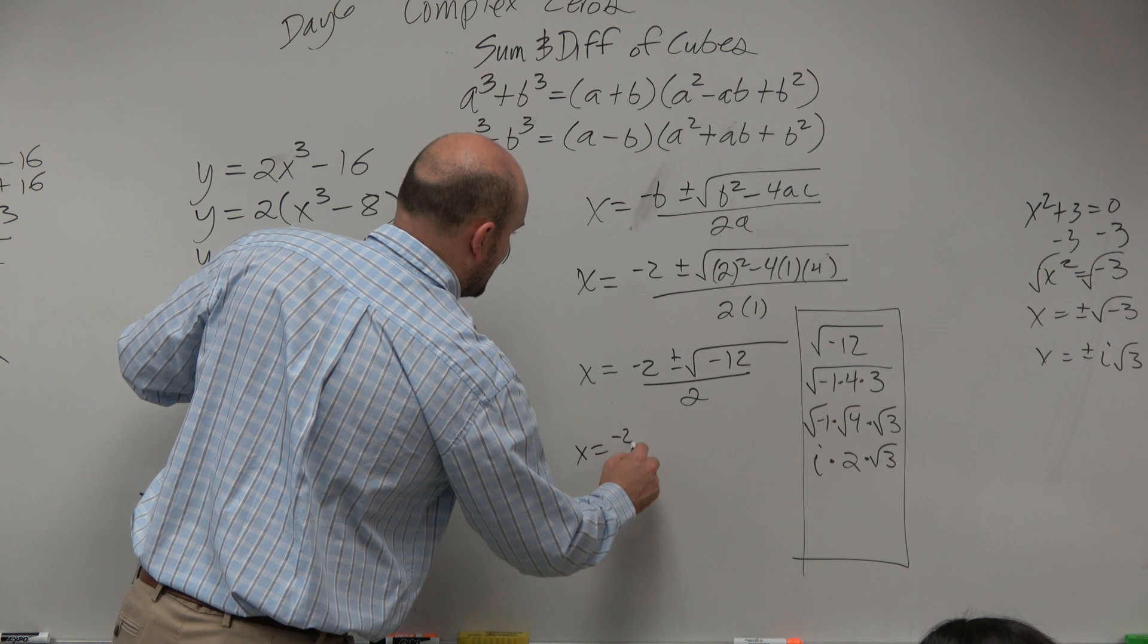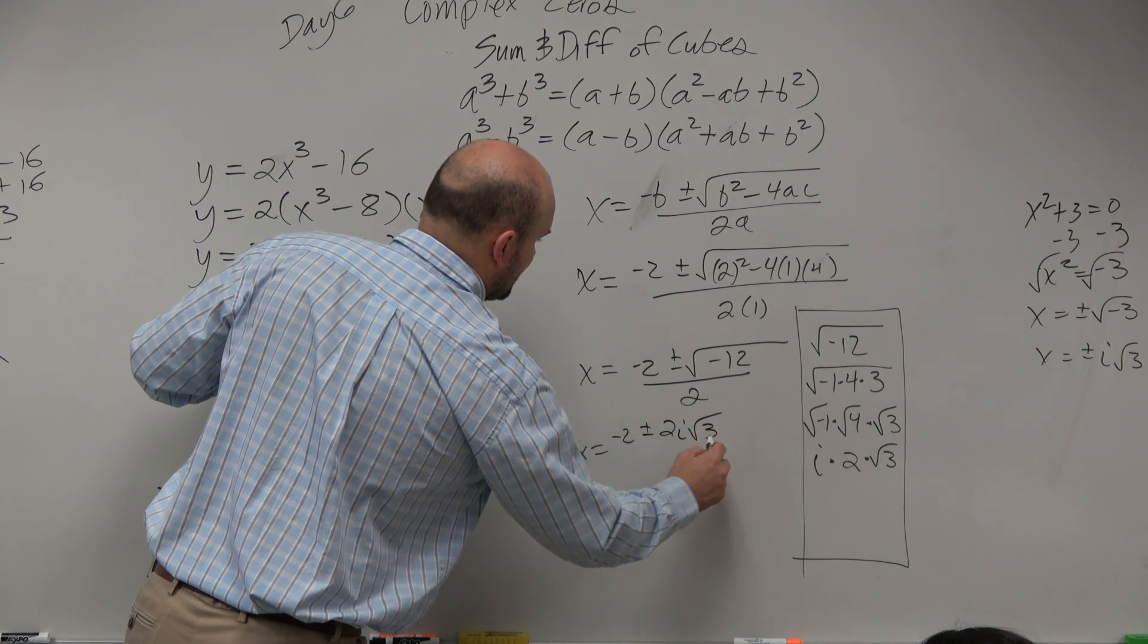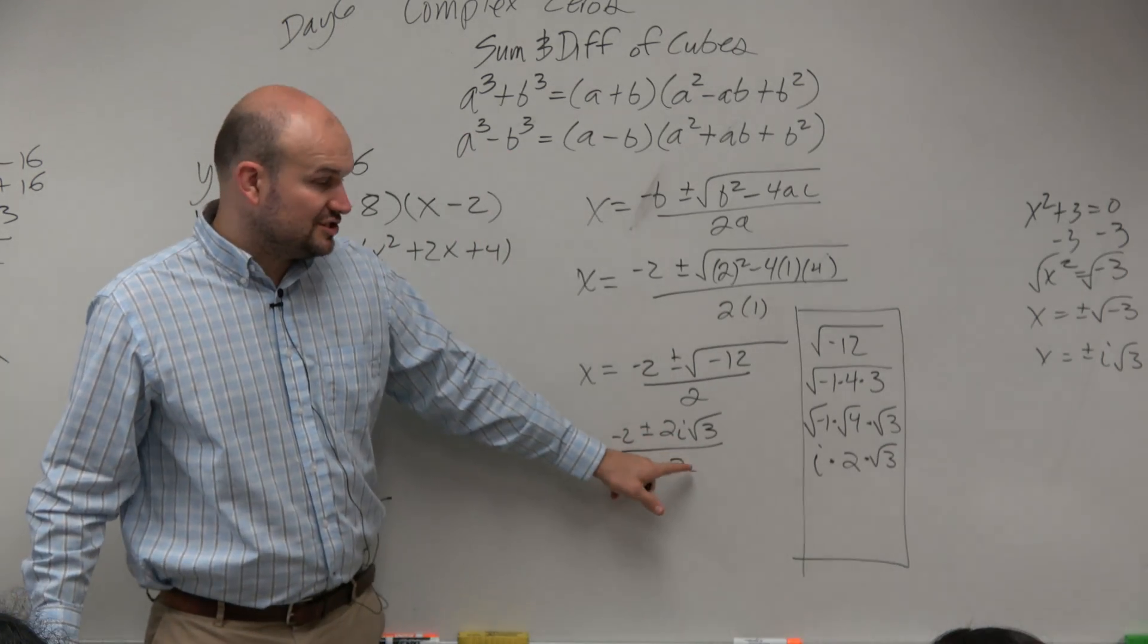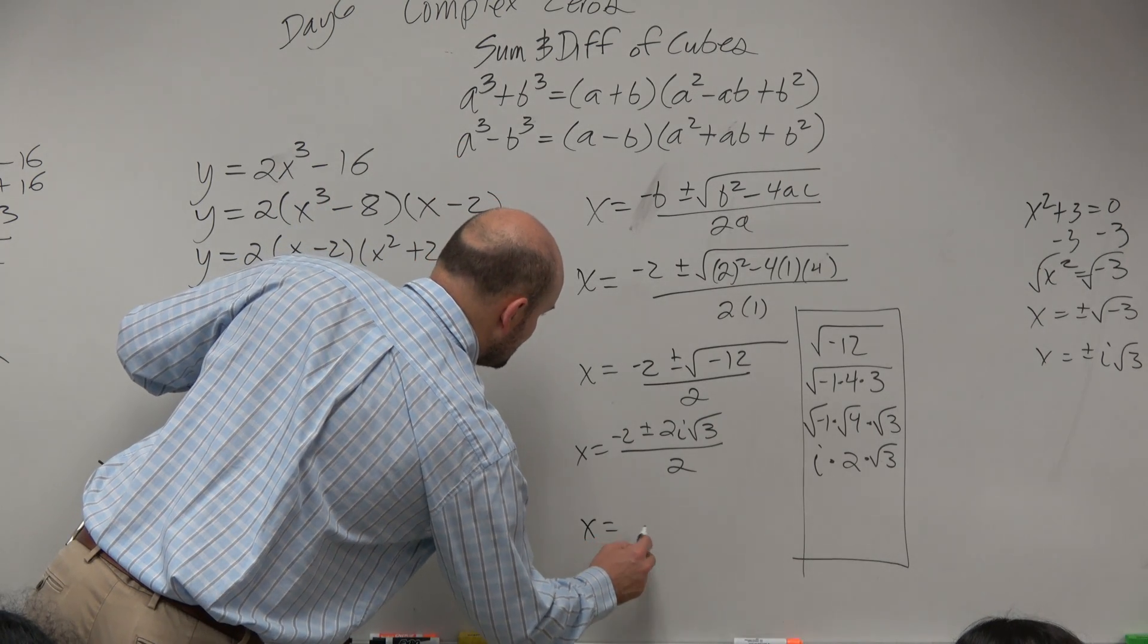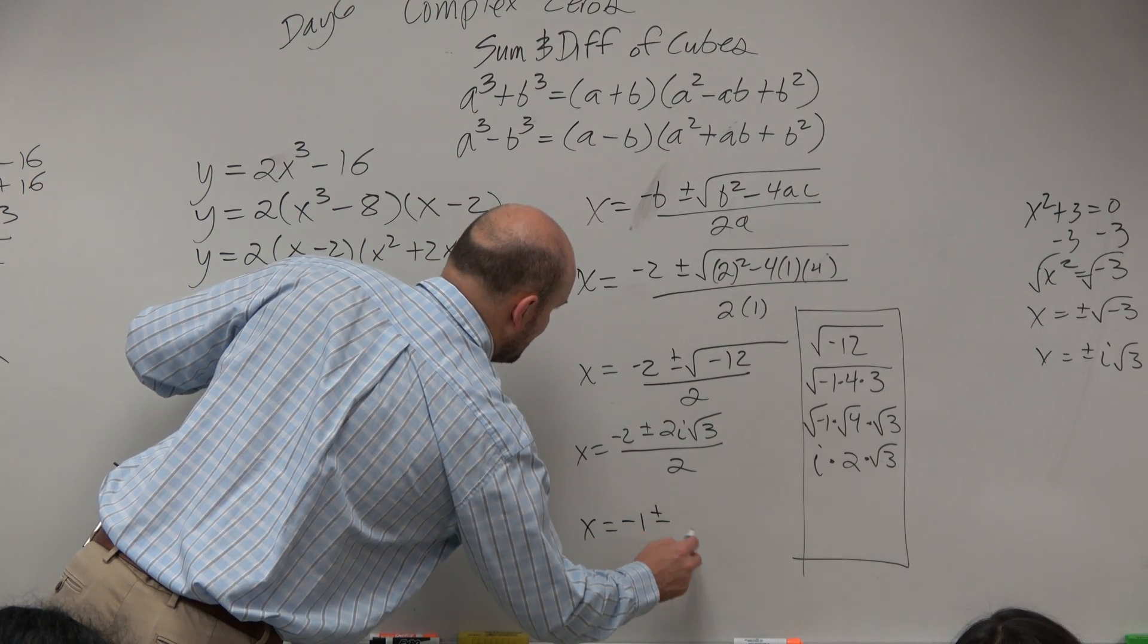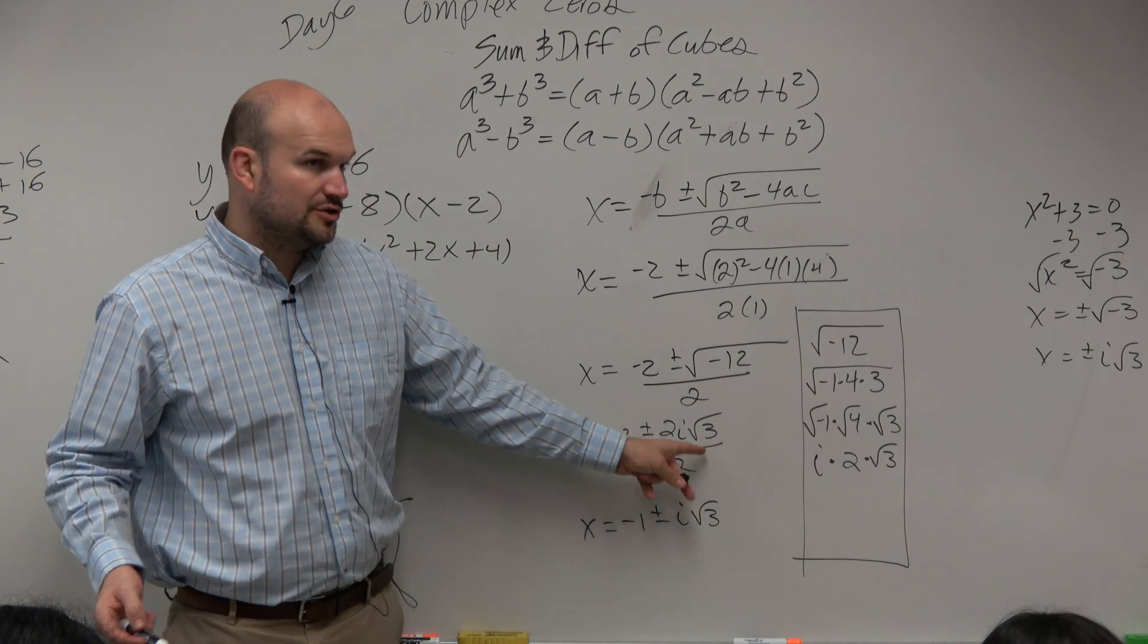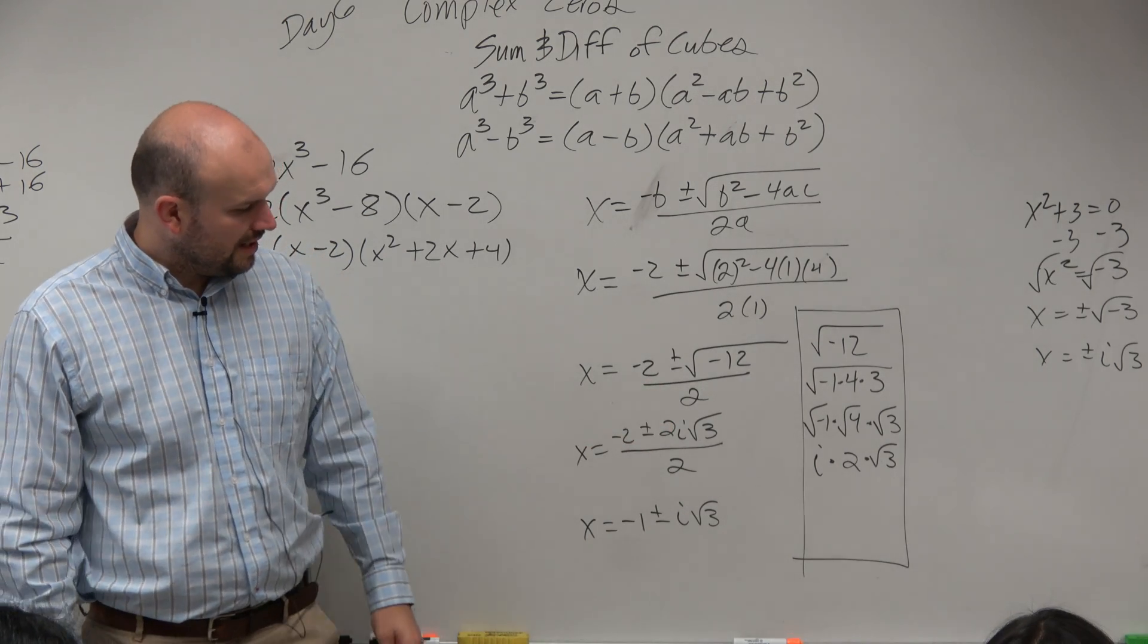we have x equals negative 2 plus or minus 2i square root of 3 over 2. You can divide the 2 into both of those terms, and you could say x equals negative 1 plus or minus i square root of 3. So the 2 divides evenly into both of those terms. All right?